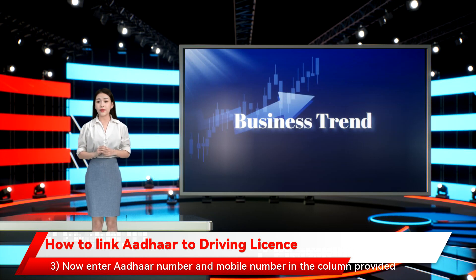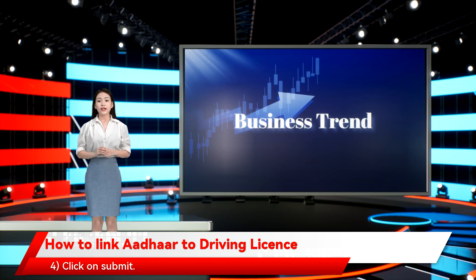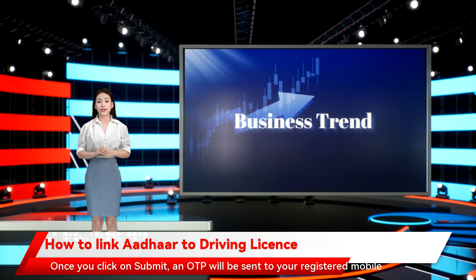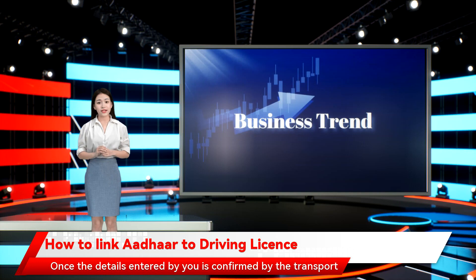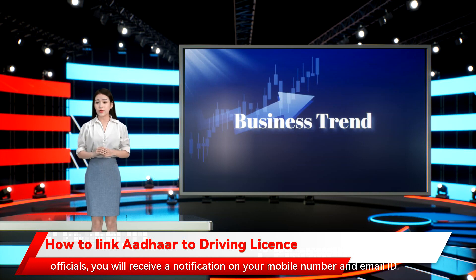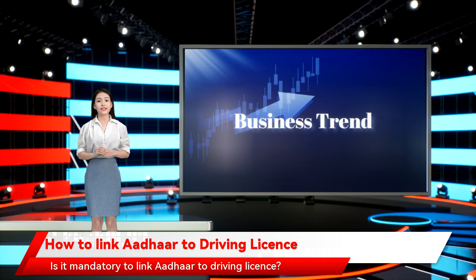Step 3: Now enter your Aadhaar number and mobile number in the column provided. Step 4: Click on Submit. Once you click on Submit, an OTP will be sent to your registered mobile number. Enter that OTP and click to confirm. Once the details entered by you are confirmed by the transport officials, you will receive a notification on your mobile number and email ID.